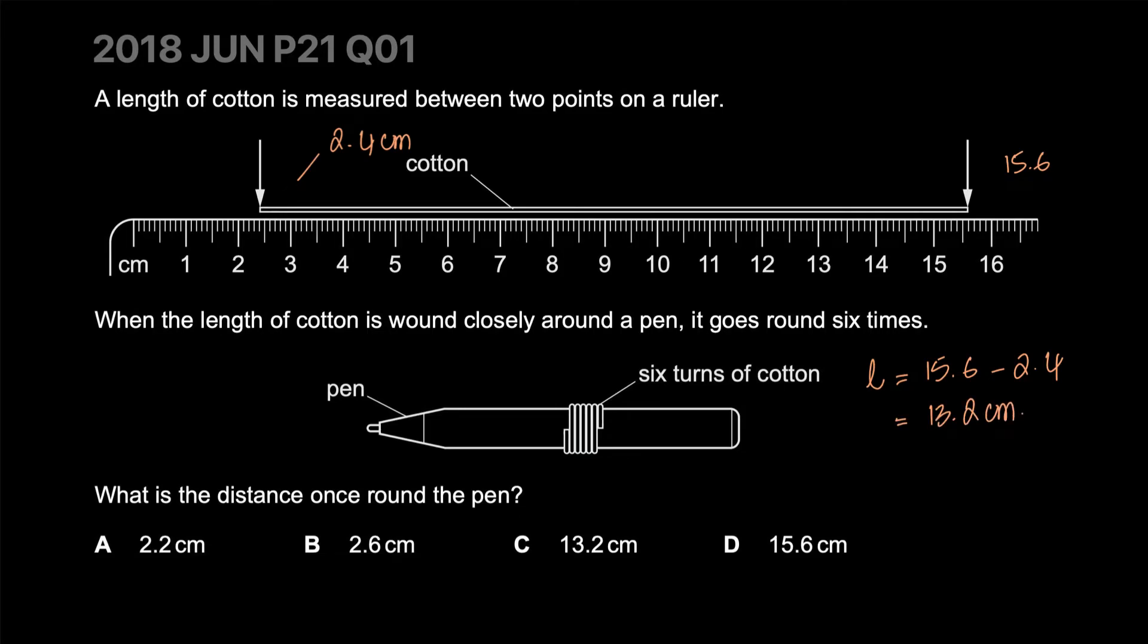This wire is wound closely around a pen and goes around exactly six times. What is the distance once around the pen? What is the circumference of the pen? This length is six times the circumference of the pen. So what's one-sixth of this? If I take 13.2 and divide it by six, my value comes out to be 2.2 centimeters. The answer is A.